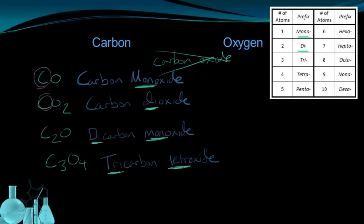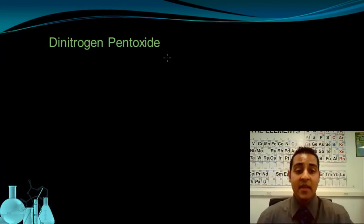Now that we've gone over how to write the name for a given formula, it should be fairly straightforward to go in the opposite direction. So here we have a name, dinitrogen pentoxide, and we're going to figure out what the formula for this is from the name. So nitrogen tells me that I have the element nitrogen, and oxide tells me that I have the element oxygen.